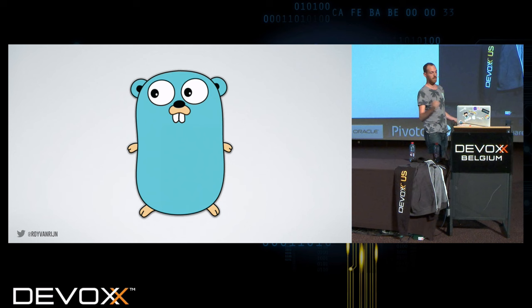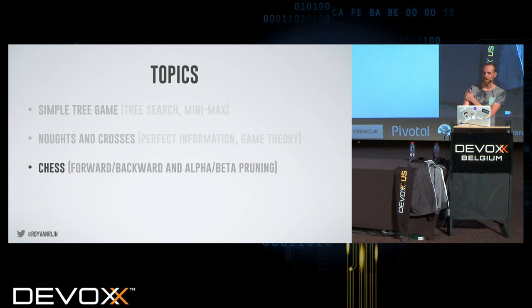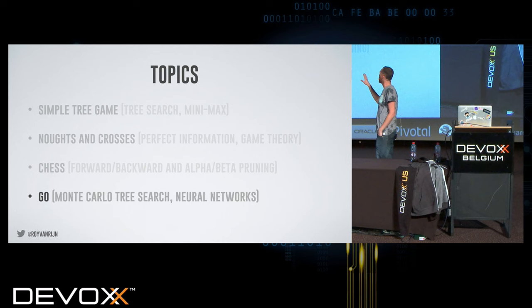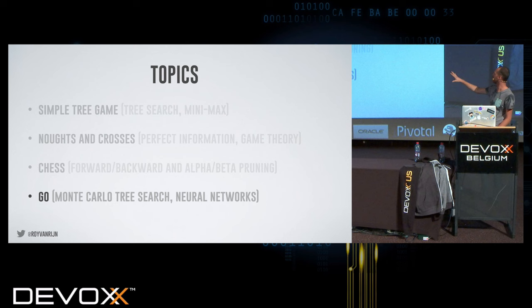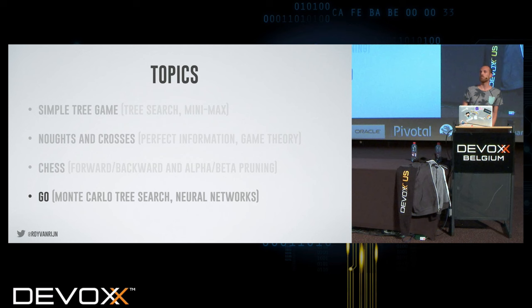If you're here for Go the programming language, you can leave because that's not what I'm talking about. I'll show the list. We'll start with a very simple game. Using this simple game I'm going to introduce you to Tree Search and Minimax. Then we'll move on to a more complex game, Knots and Crosses. We'll talk about perfect information and game theory. Then a bit more complex game, forward and backwards pruning. And finally we move to Go — and then we forget everything, because all these techniques don't work in Go. Spoiler.